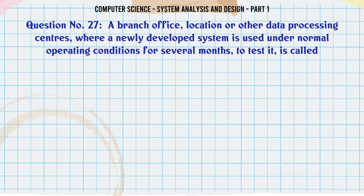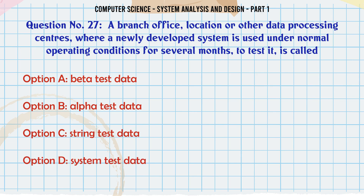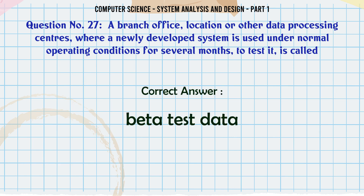A branch office, location, or other data processing center where a newly developed system is used under normal operating conditions for several months to test it is called: A. Beta test data. B. Alpha test data. C. String test data. D. System test data. The correct answer is: Beta test data.